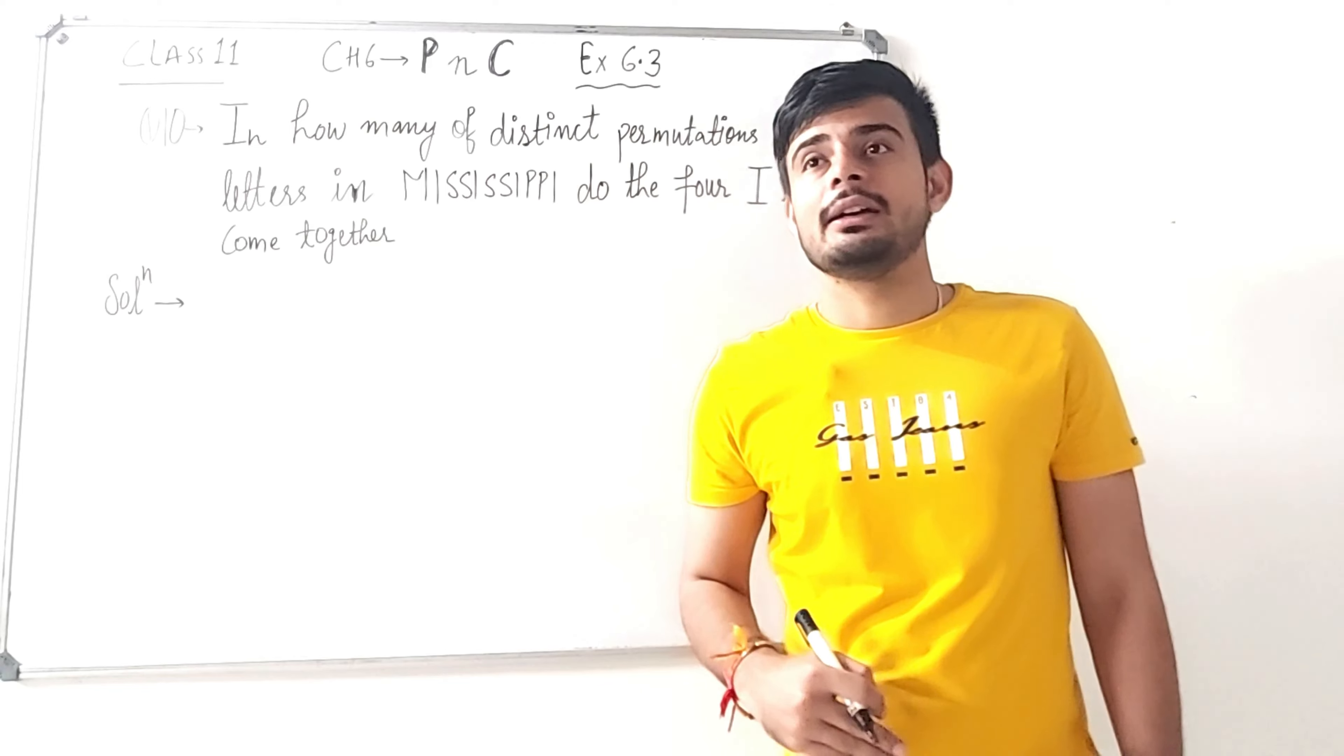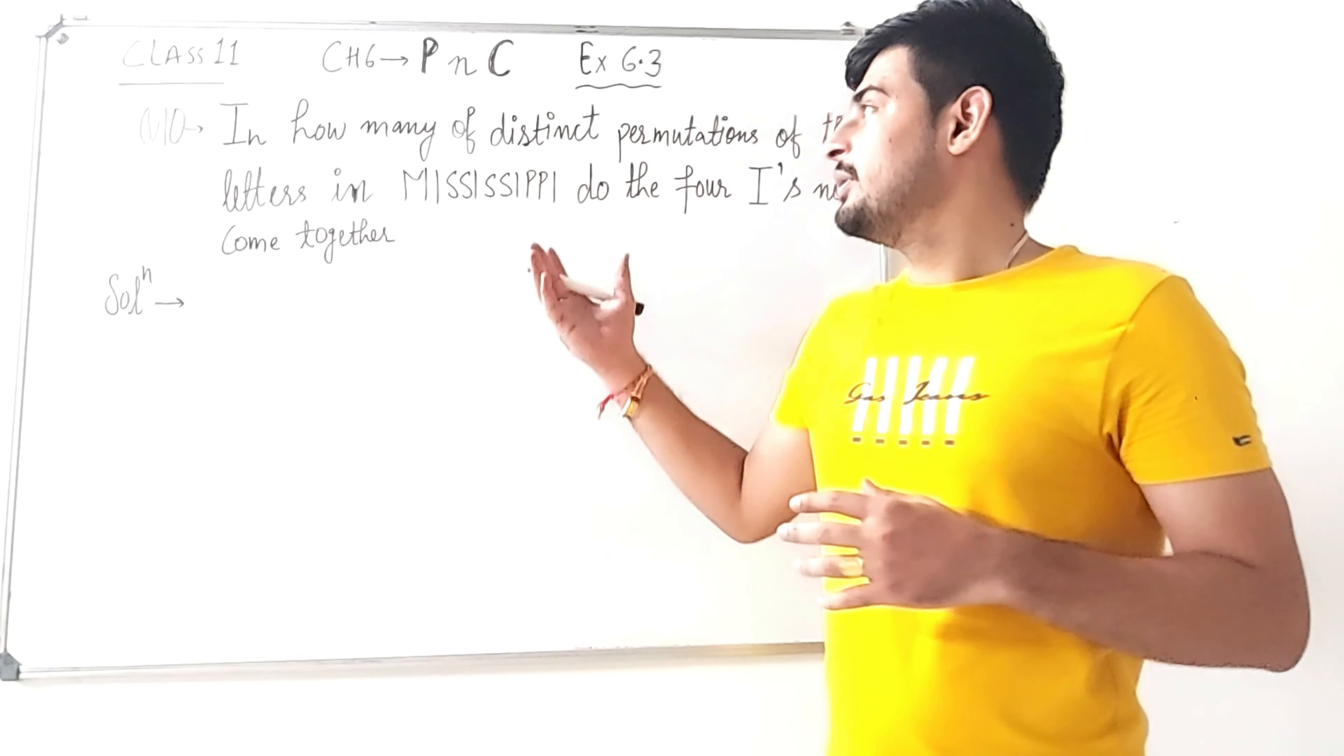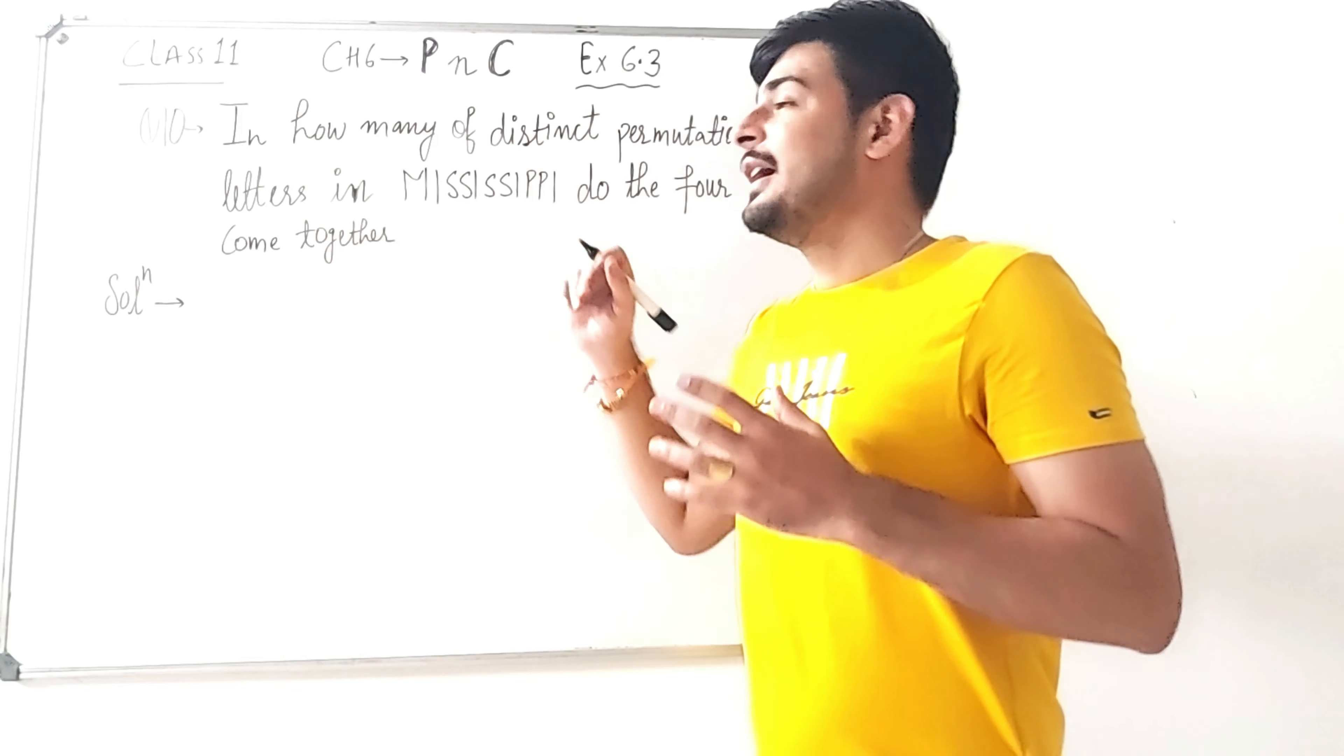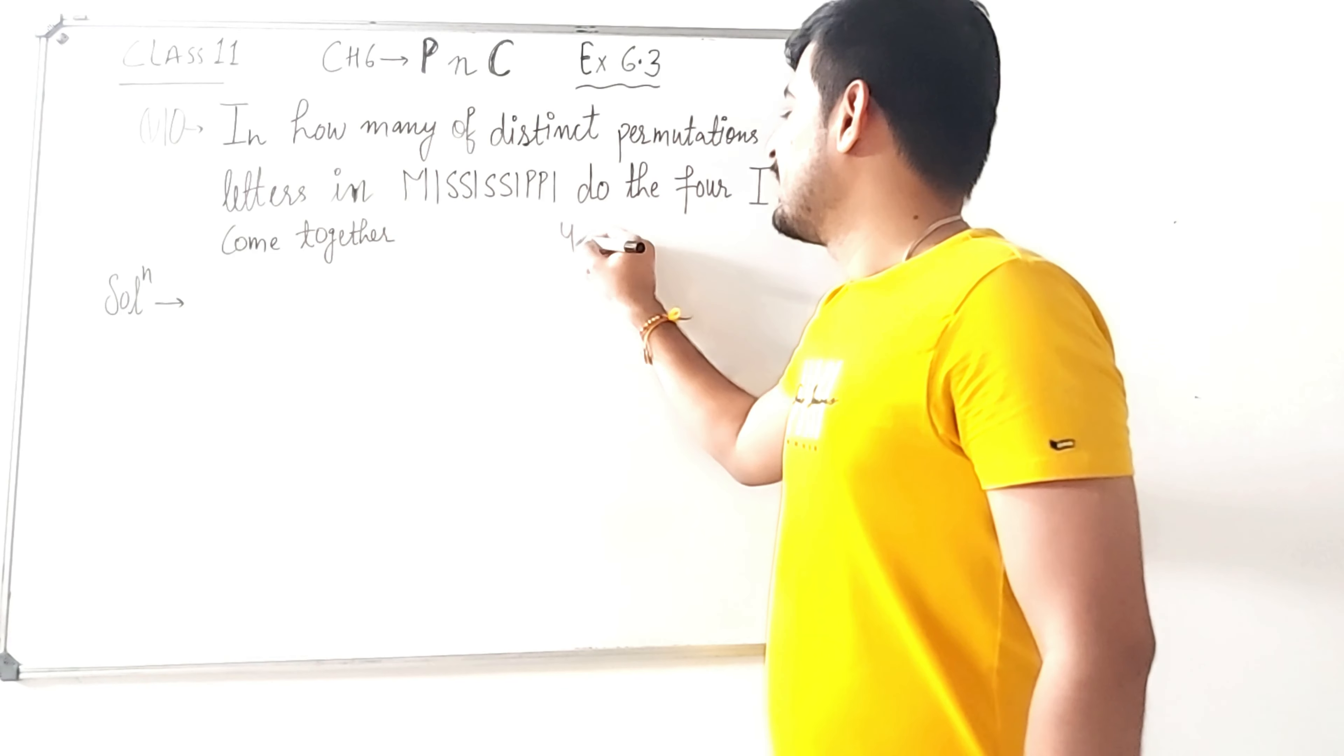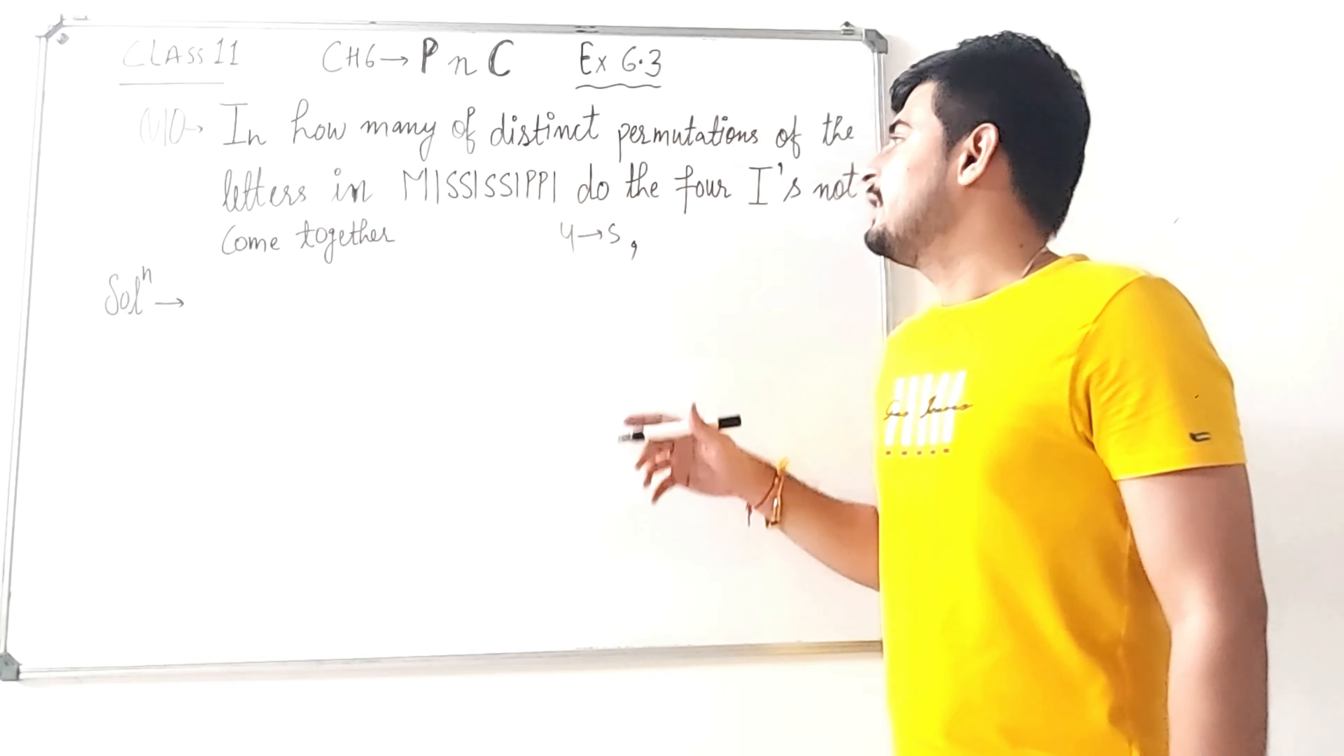Then we are going to discuss the total number of permutations of Mississippi letters. So here we have total 11 letters in Mississippi. In the 11 letters we have 4 S's and we have 4 I's.